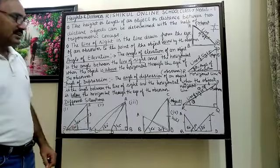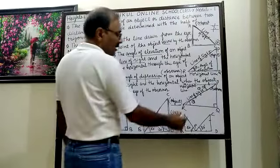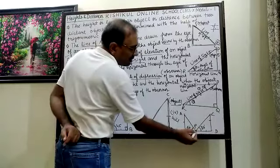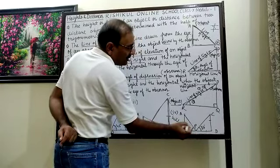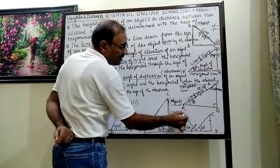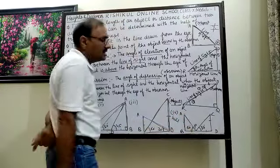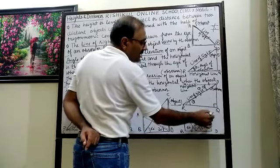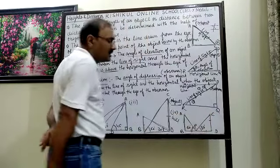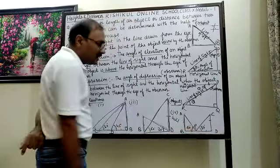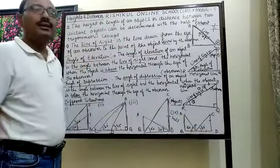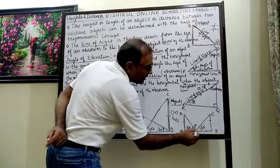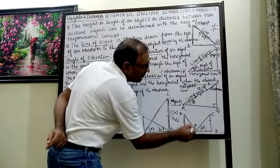Now situation 4: AB and CD are two poles of equal height. We observe from point P. The angle of elevation to point A on the first pole is 60 degrees, and at the same point, the angle of elevation to point C on the second pole is 100 degrees. The line PB is smaller than PD, so the angle of elevation to the nearer pole will be bigger.